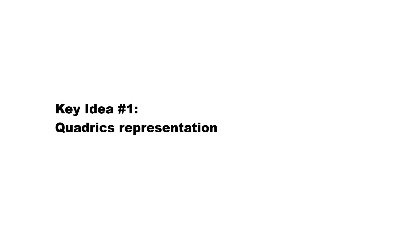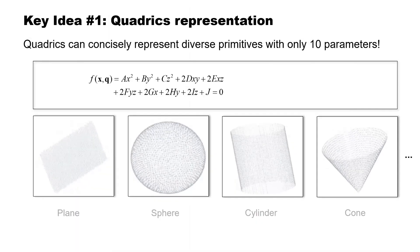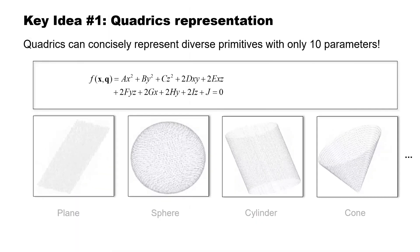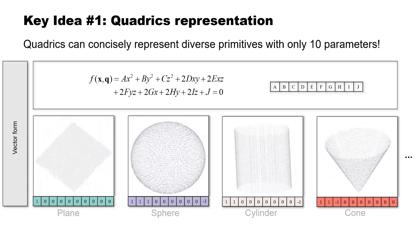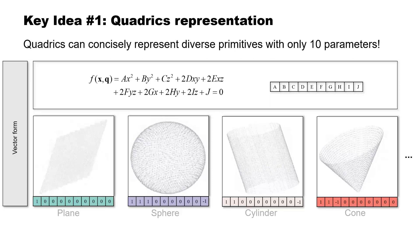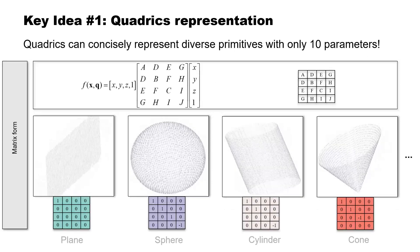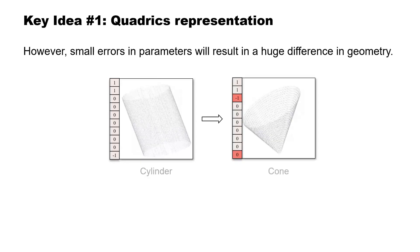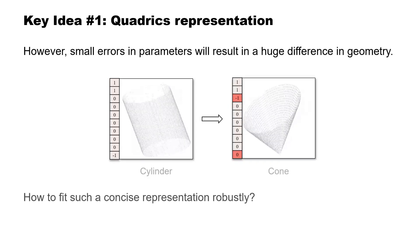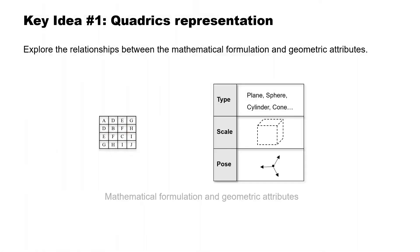Key idea 1 — quadrics representation. For the unified representation, we find that quadrics can concisely represent diverse primitives with only 10 parameters. The mathematical formulation of quadrics includes both vector form and matrix form. However, small errors in parameters can result in a huge difference in geometry. We believe that the relationships between the quadrics mathematical formulation and geometric attributes should be fully considered.